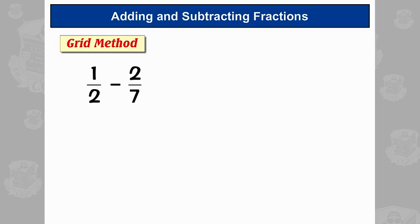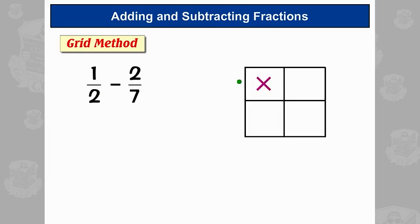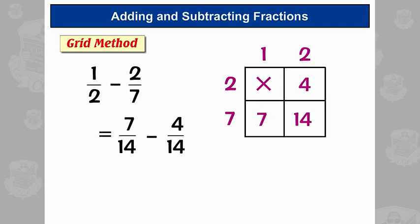Another example, 1 half minus 2 sevenths. If it's plus or minus, it's still pretty much the same method. Draw a grid, put a time sign in. Then you put the numbers of the fractions here and here. So 1 and 2 there, 2 and 7 there. Fill in the grids by multiplying. And now you write out this again, but using these numbers. So it's 7 over 14, and that's the same as a half, of course. And then minus 4 over 14. And now you can say 7 minus 4 is 3, so it's 3 14ths. So it makes life a bit easier, doesn't it? So if the grid method floats your whistle or blows your boat or whatever, then use it and enjoy.